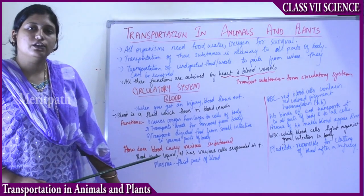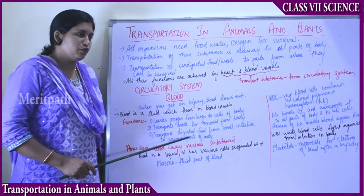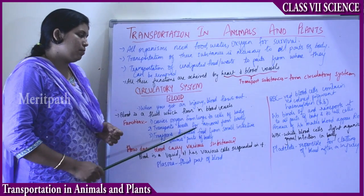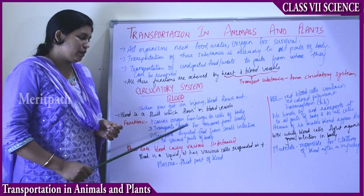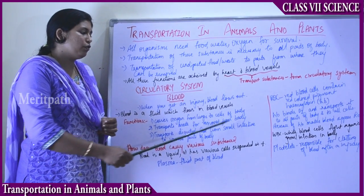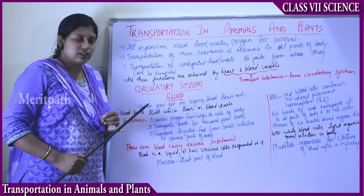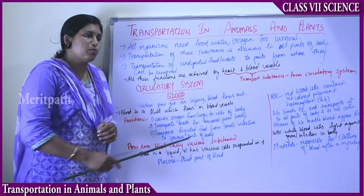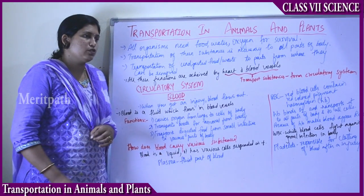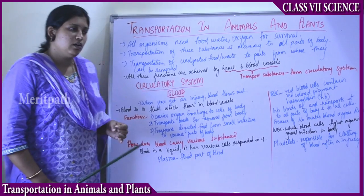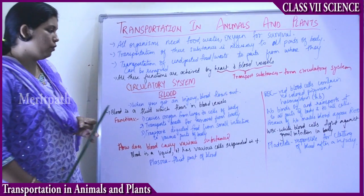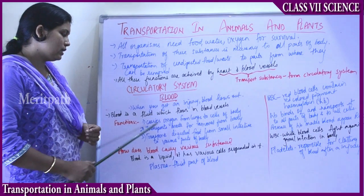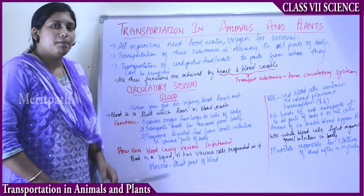What are the functions of blood? It carries oxygen from the lungs to various cells of the body. It transports waste for removal from the body. It also transports digested food from the small intestine to various parts of the body. So blood transports oxygen, digested food, and waste for removal from the body.